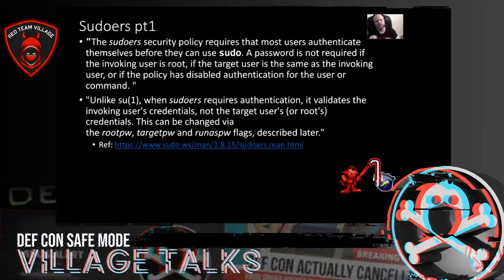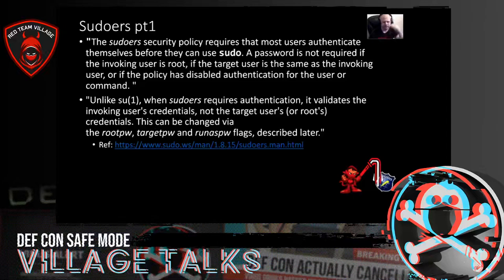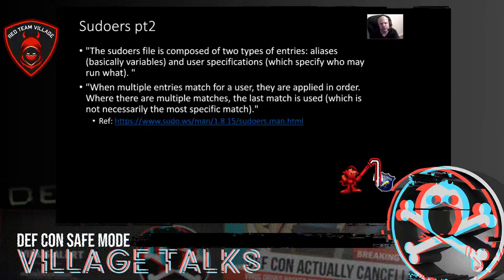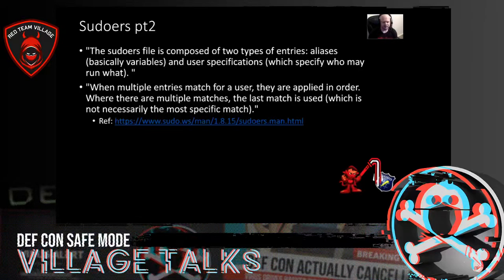By default, password authentication is required, but you can specify no password. Unlike SU, where you authenticate as the user you're trying to do stuff as (like root), with sudo you authenticate as the user calling it. The file is composed of two main parts: aliases, which are like variables and placeholders, and user specs, which are the five W's. When multiple entries stack up, they're applied in order and rack and stack into the last one.